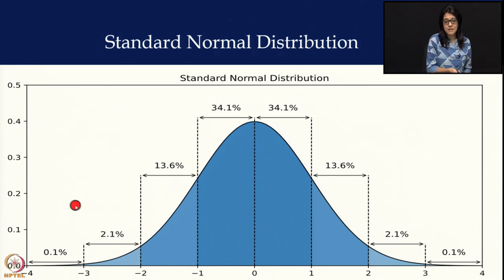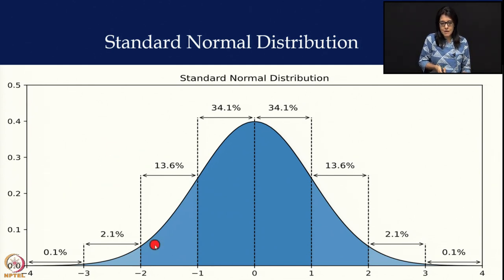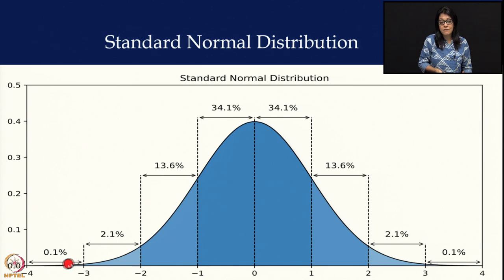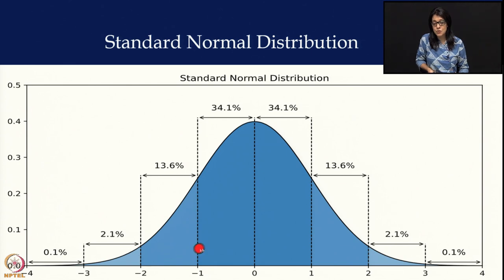Once children start falling below minus 2 standard deviation, they are counted as undernourished — moderately malnourished or severely malnourished. Moderately malnourished are children between minus 2 and minus 3 standard deviation, and severely malnourished are children falling below minus 3 standard deviation. We have to immediately work on these children to bring them up at least towards the mean — our goal is to bring them as close to the mean as possible.